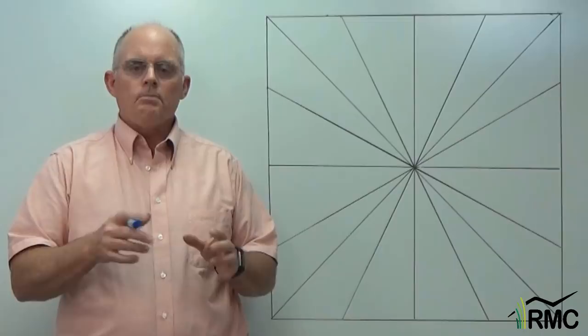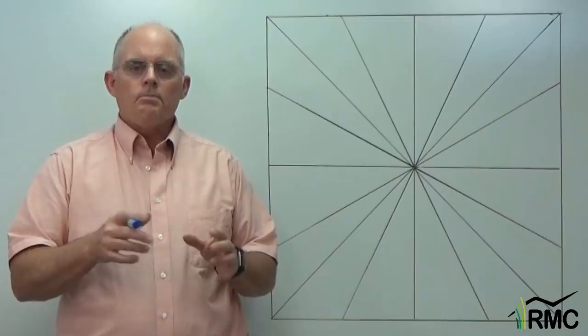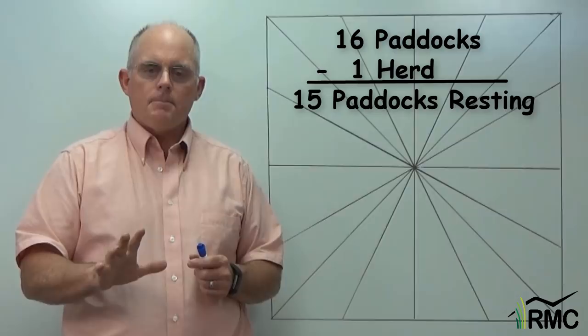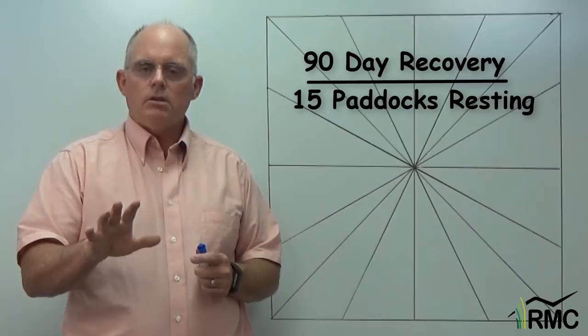He has 16 paddocks with one herd. That means 15 of the paddocks are resting at any particular time. Divide 15 paddocks into 90 days of rest, and we see that he needs six-day graze periods.